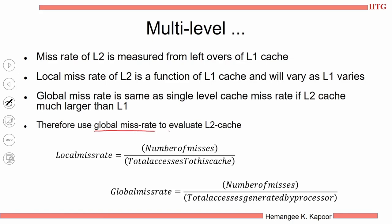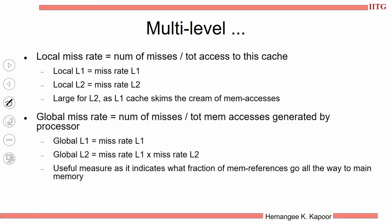We are going to use global miss rate when evaluating L2 caches. With a larger L2, L1 skims the cream of the memory accesses and only sends some accesses to L2, hence the local miss rate of L2 is mostly not so good. Global miss rate is the better measure. If you see the formula, global miss rate of L1 is the same as local of L1, but global miss rate of L2 is the product of miss rates of both L1 and L2. This tells us what fraction of memory accesses go all the way to main memory.